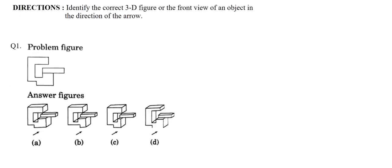Here we have a few directions first: identify the correct 3D figure or the front view of an object in the direction of the arrow. So we will be either given the object or a figure in which we need to find the 3D figure or the front view of an object, which will be given in a 3D format.